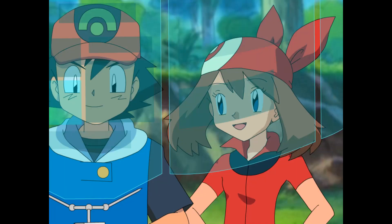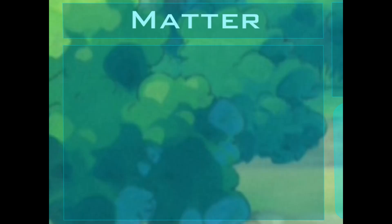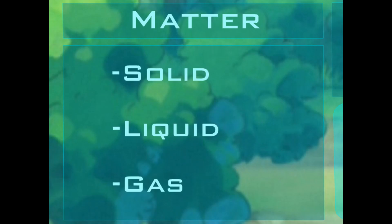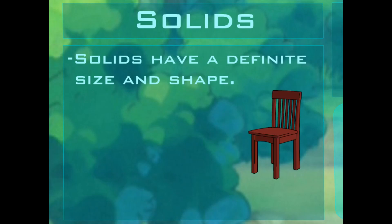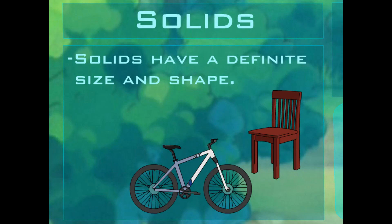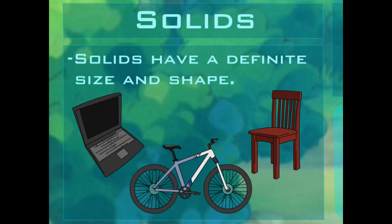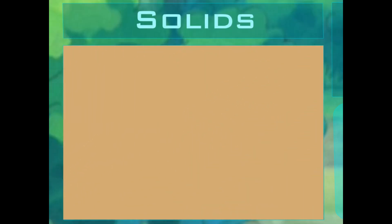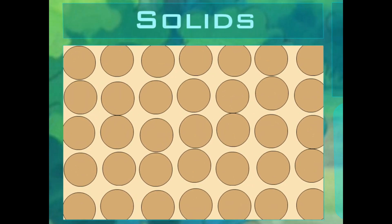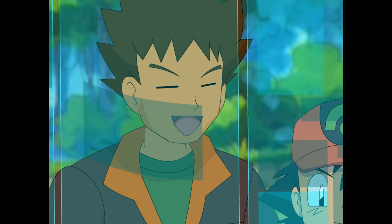What does that have to do with it? Matter is everything! Everything is made up of matter, and there are three main kinds: solid, liquid, and gas. Solids are things that have a definite size and shape, like this chair I'm sitting in, or a bicycle, or a computer — anything that is solid. Solid as a rock! You got it! Solids are solid because the particles that make up the object are packed in tight, and they may vibrate or jiggle, but basically they're not going anywhere.